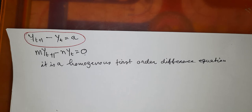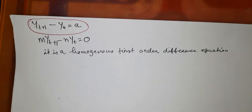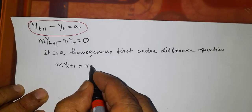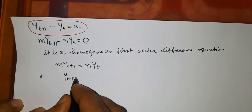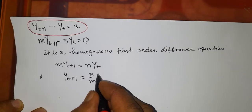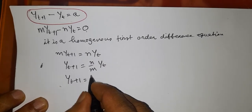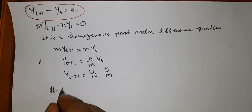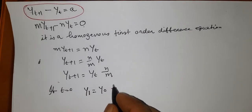In order to solve this homogeneous first order difference equation using the iterative process, we write m·y_{t+1} = n·y_t, or y_{t+1} = (n/m)·y_t. If t = 0, then y_1 = y_0 · (n/m).